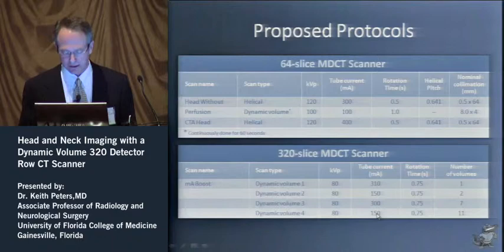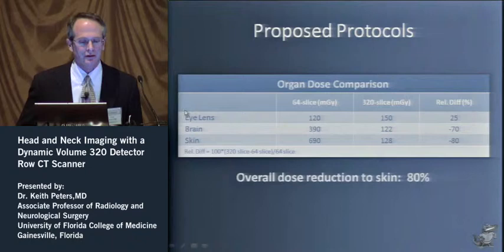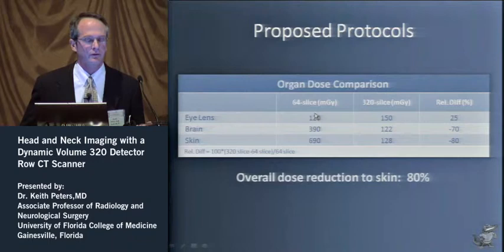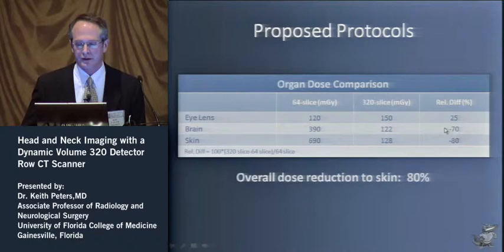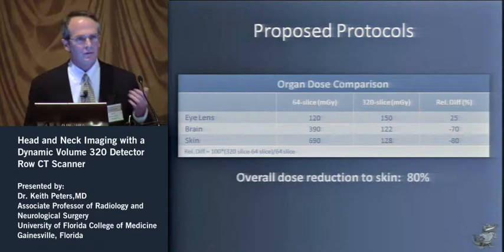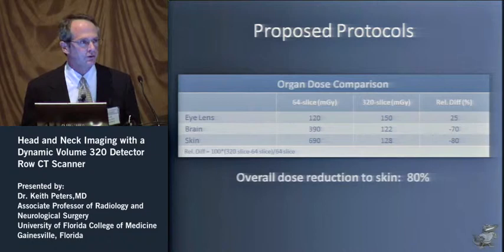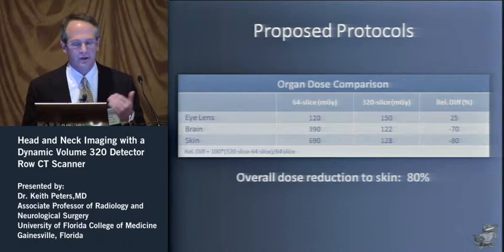Comparing the two protocols, one expected finding is that dose to the eye increases, because on the 64-slice the eye was excluded from the 4-centimeter slab and only received dose during the normal helical scan, whereas on the 320 it is included in the perfusion area. This leads to a 25% increase in dose to the eye, which our medical physicists consider a very nominal increase. However, there is a marked reduction in dose to the brain and, more significantly, to the skin — an overall 80% reduction in skin tissue dose. For our patient population undergoing serial CTAs and perfusions for aneurysm evaluation and vasospasm workup, this is a very significant benefit.